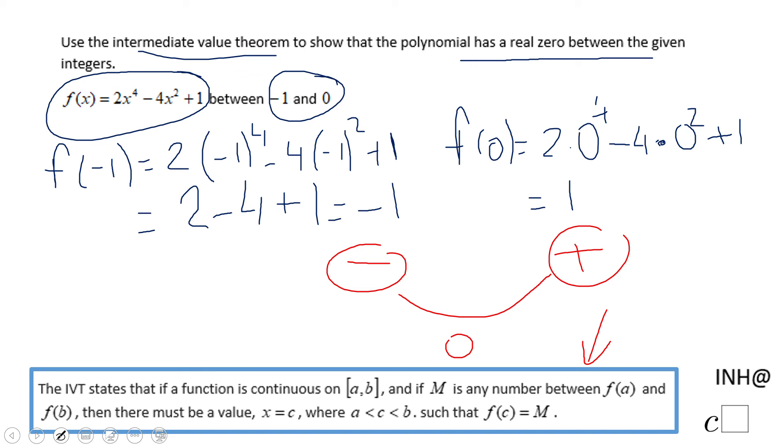The value of the function at -1 is negative, and the value at 0 is positive. So somewhere between -1 and 0, the function will be zero.